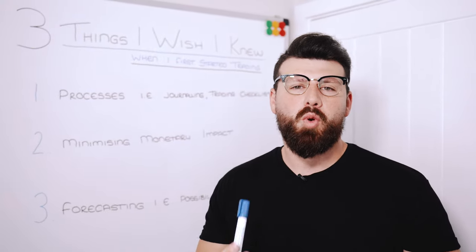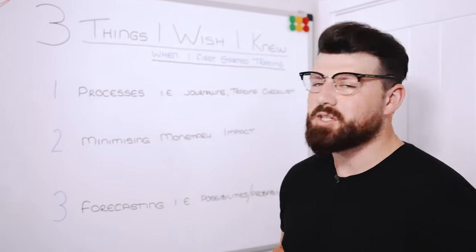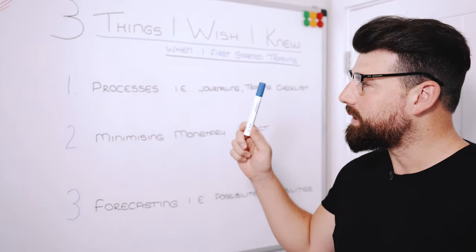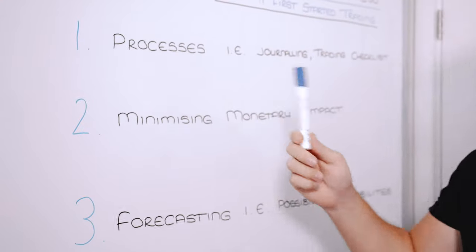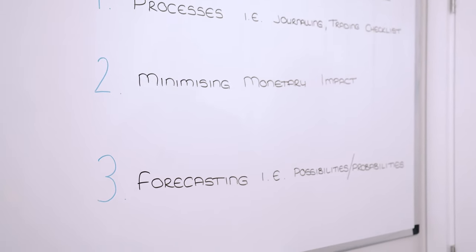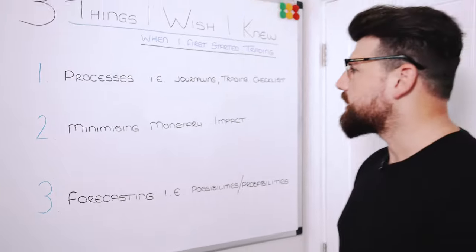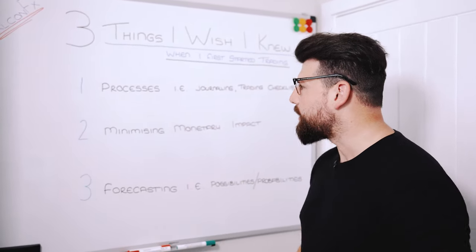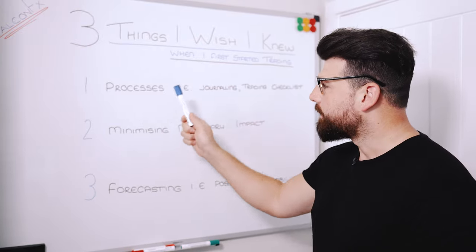I was going to just talk about this part but I thought it would be perfect to put something on the board just so you can reference. So essentially these are the three things: processes, minimizing the monetary impact, and forecasting. These are honestly the three things that come to mind.